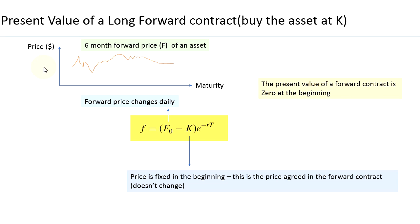Remember, the forward prices and the futures prices keep changing on a daily basis in the market. Here I'm just showing you a diagram of price against maturity, i.e., time. Let's assume that you want to buy corn — a particular quantity of corn — in 12 months time. So you want to enter into a corn futures contract and buy the asset, meaning you want to enter into a long forward or a futures contract.